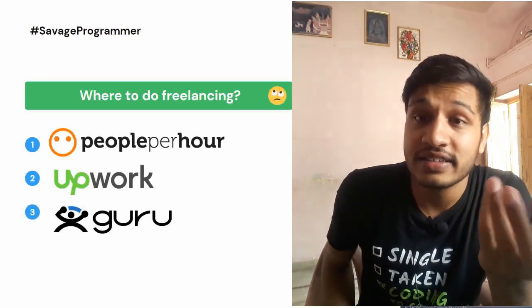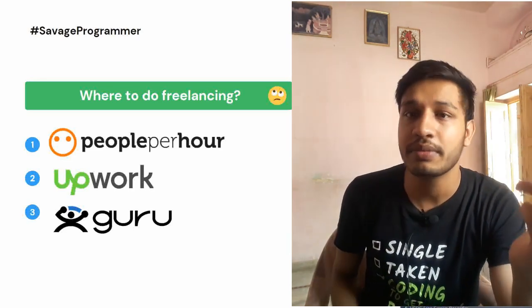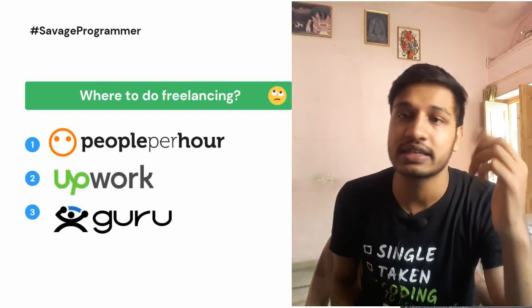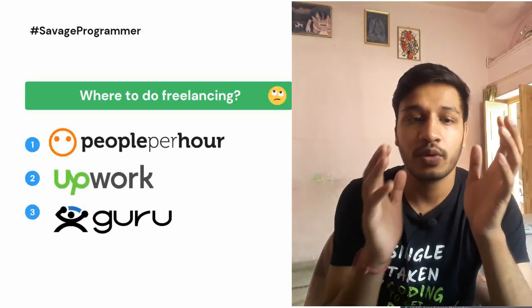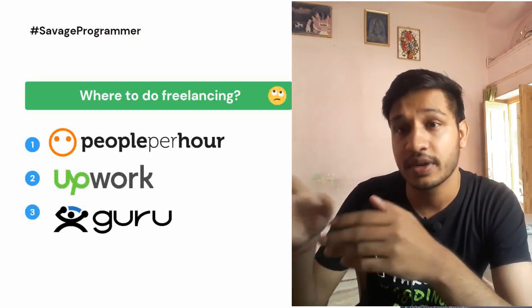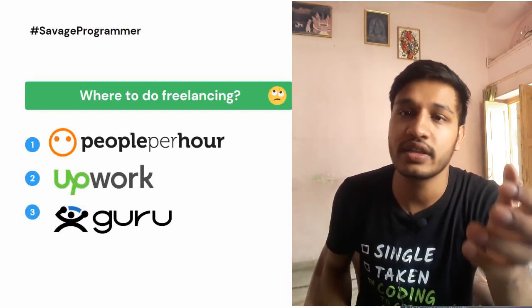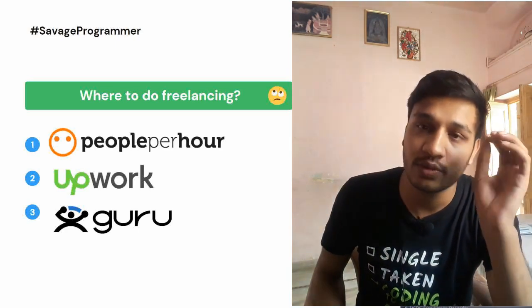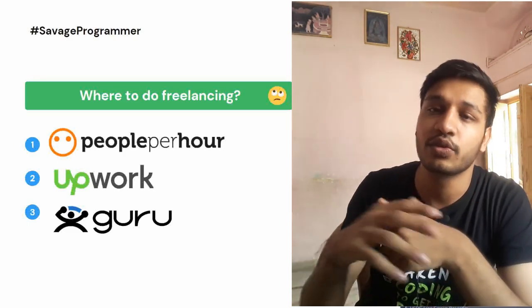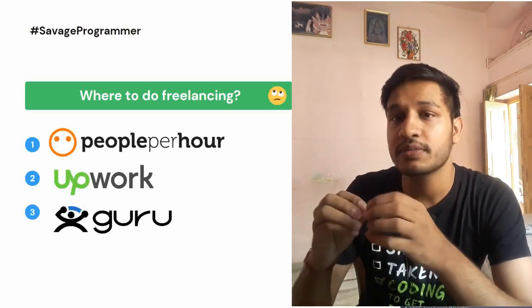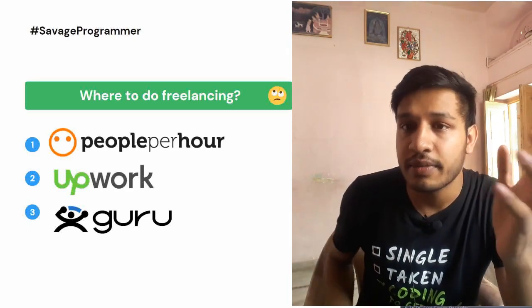Now an important question: what to freelance? Everything is freelancing — you can do content writing, copywriting, Photoshop, Adobe Premiere Pro, video editing, poster creating, digital art creation. All these things are freelancing. But since our audience is mostly from the tech industry, we belong to the software development domain. So the most important domains for us are web development, Android development, machine learning, and natural language processing. For website development, CMS tools like WordPress, Laravel, and WooCommerce are very much in demand.